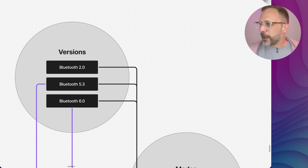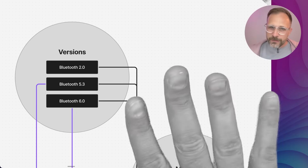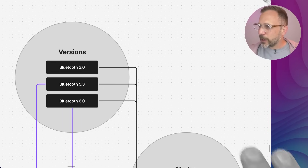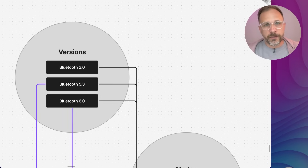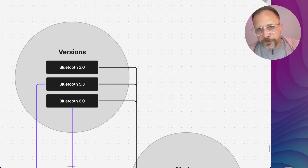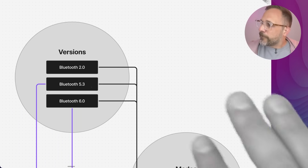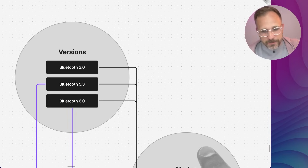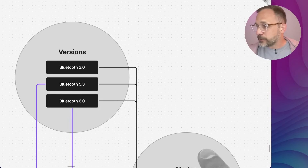We're going to go through a diagram that I put together in Figma, which is a pretty helpful tool for me to understand these Bluetooth terms. As I encounter them out in the real world — watching YouTube videos, reading articles on The Verge, or shopping for products on HiFiGo — finding these terms and putting them into this taxonomy, this mental model, helps me understand them. Hopefully it works for you as well.